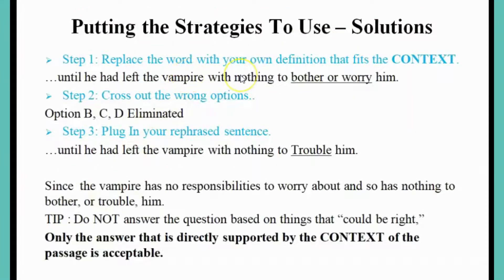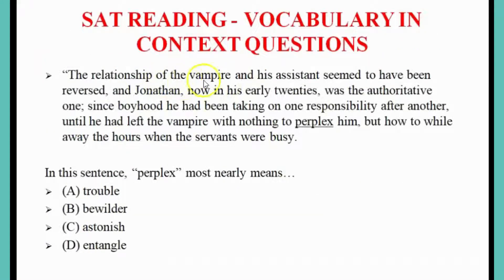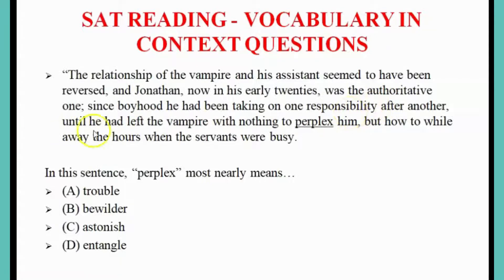First, we try to replace the word with our own definition that fits the context. The relationship of the vampire and his assistant seem to have been reversed — Jonathan, now in his early 20s, was now the authoritative one, which clearly means that earlier he was not authoritative. Since boyhood he had been taking on one responsibility after another, meaning he was dependent on someone, until he had left the vampire with nothing to — dash — him.